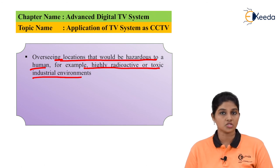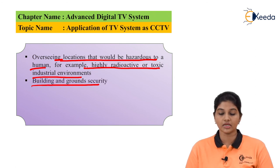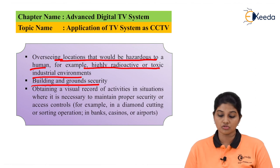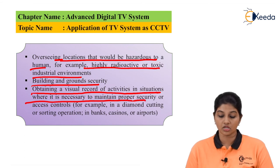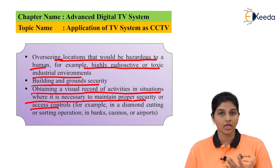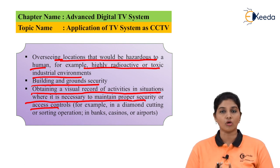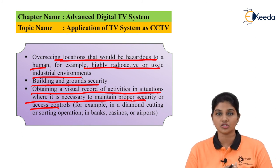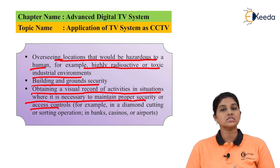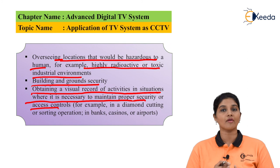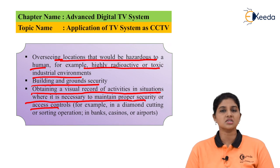CCTV is also used for monitoring industrial processes so that proper action can be taken, as well as for building and ground security. It is used for obtaining visual records of activity in situations where maintaining proper security or access control is necessary — for example, in diamond cutting facilities, banks, or airports. These are areas requiring continuous monitoring and observation of people, which is not safely possible by humans alone, making CCTV essential.